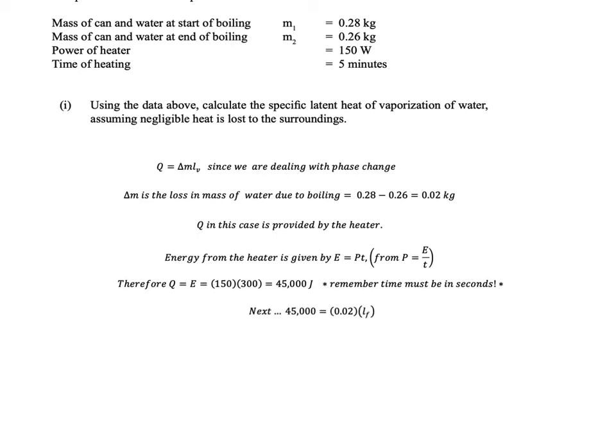Alright, so next we equate everything that we know. So 45,000, which is our Q, is equal to 0.02, which is our loss in mass, multiplied by L subscript v.